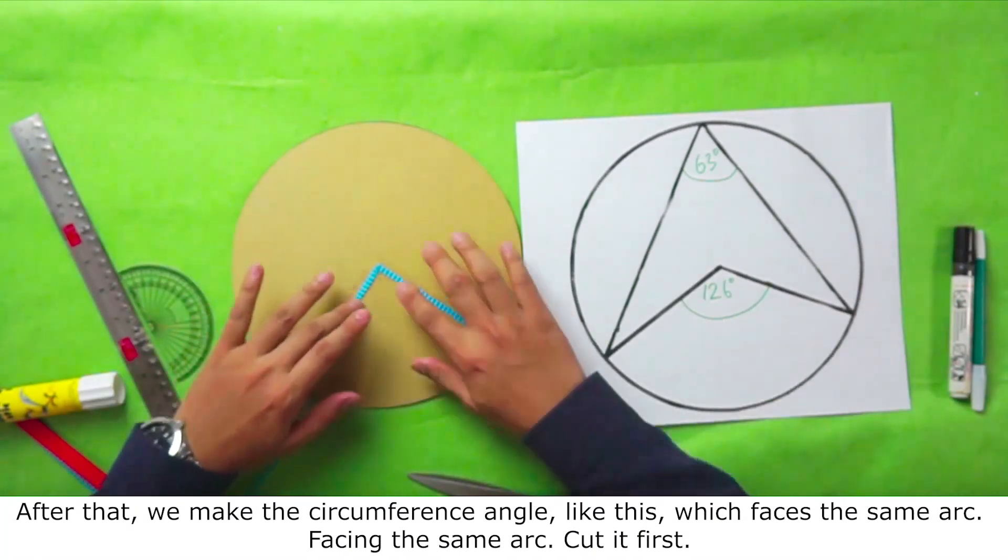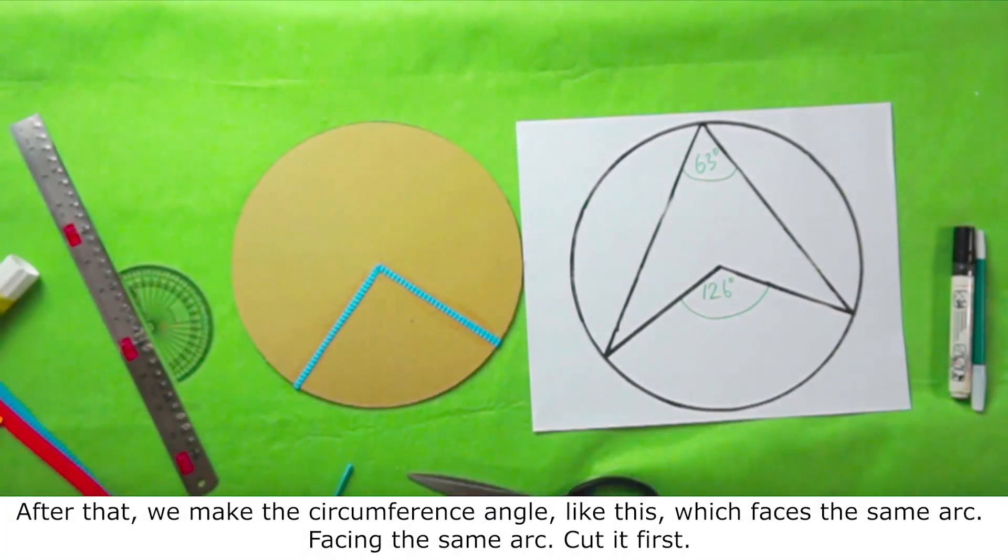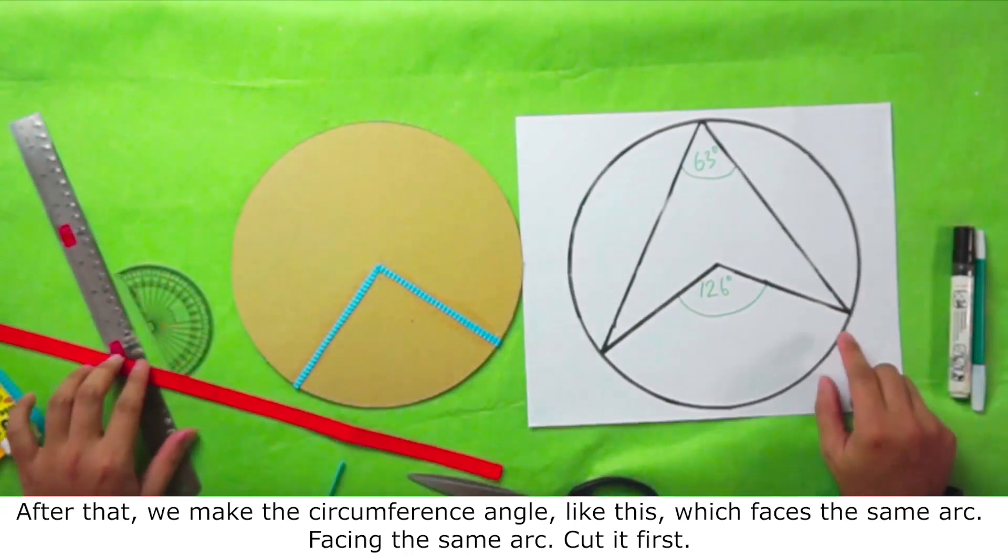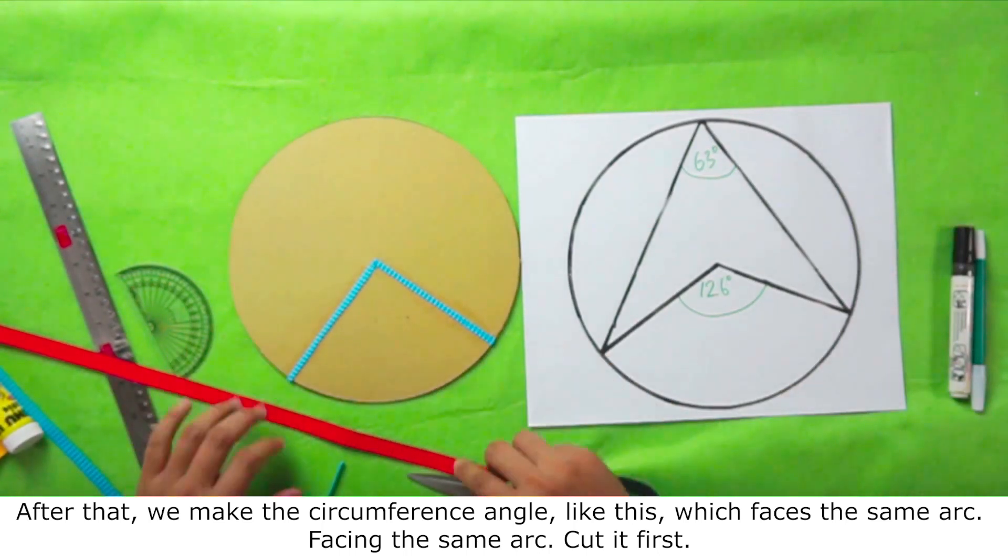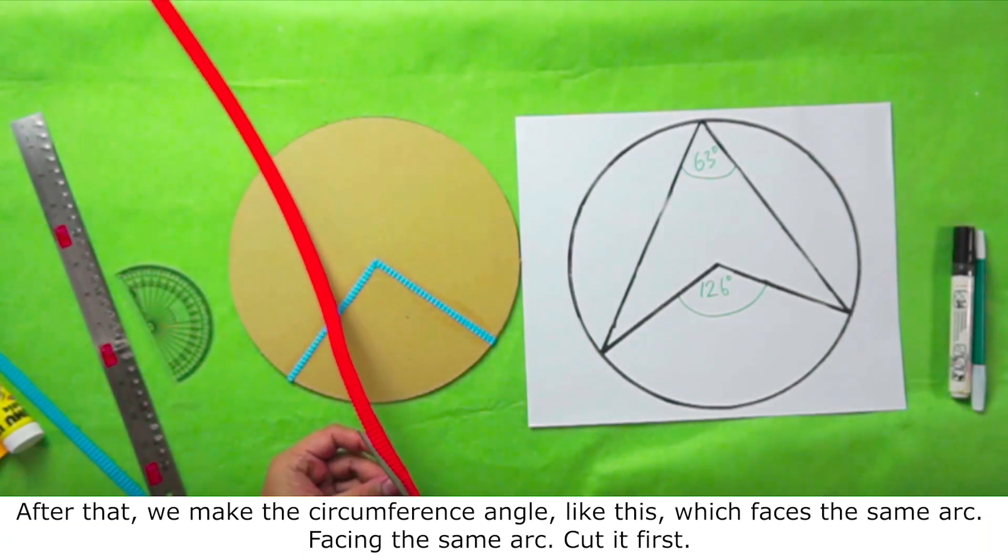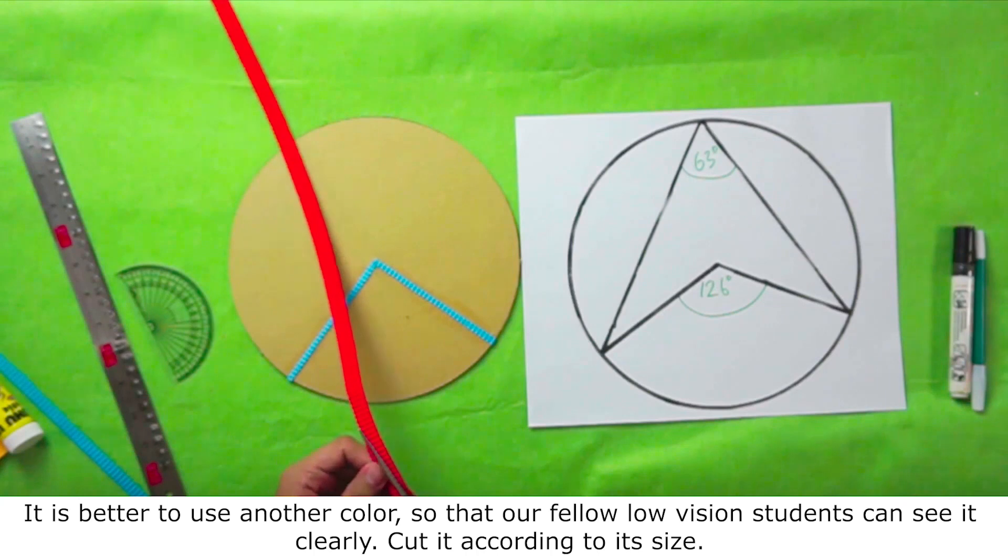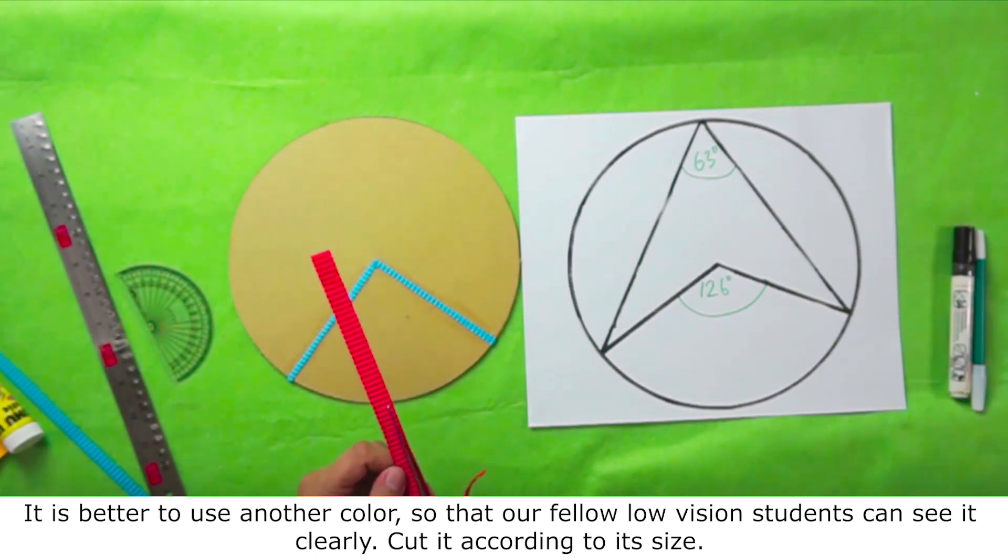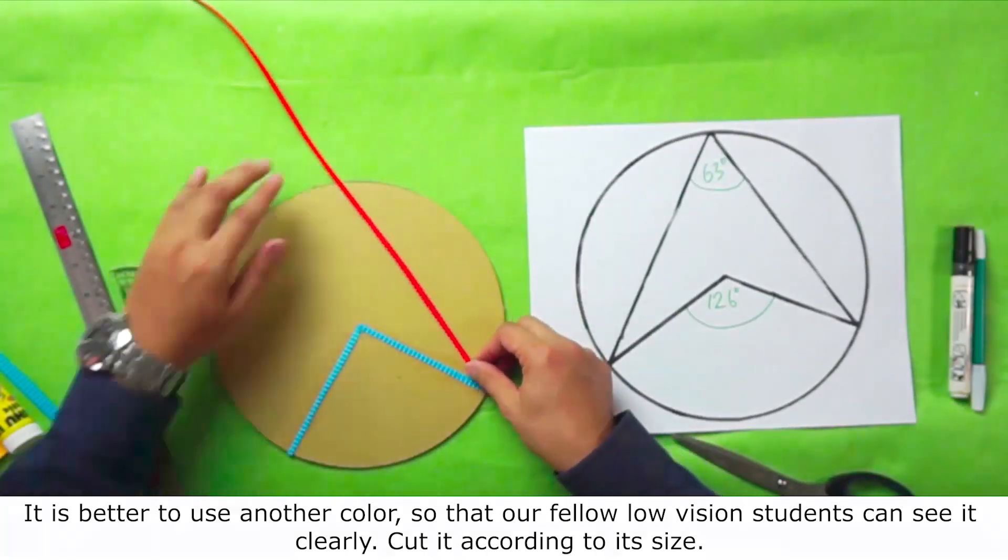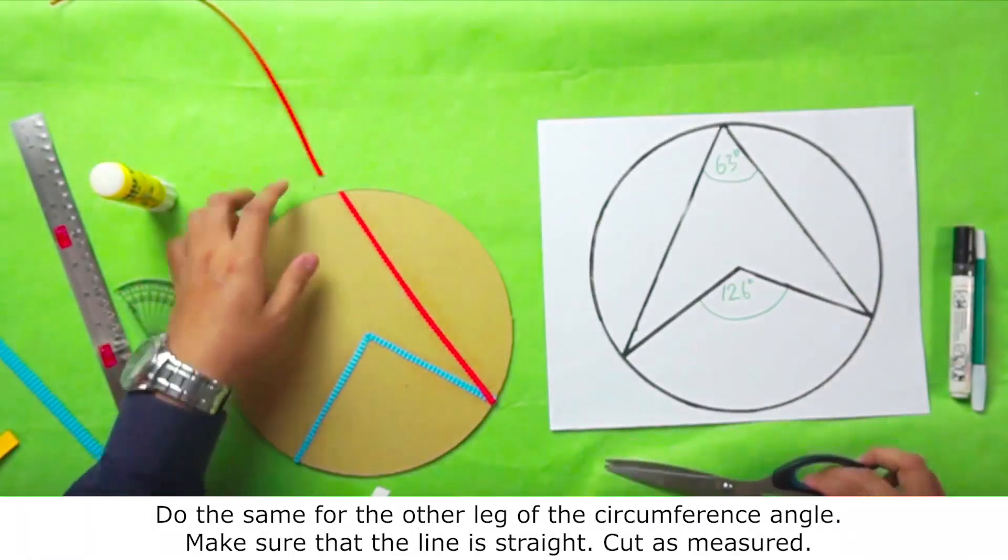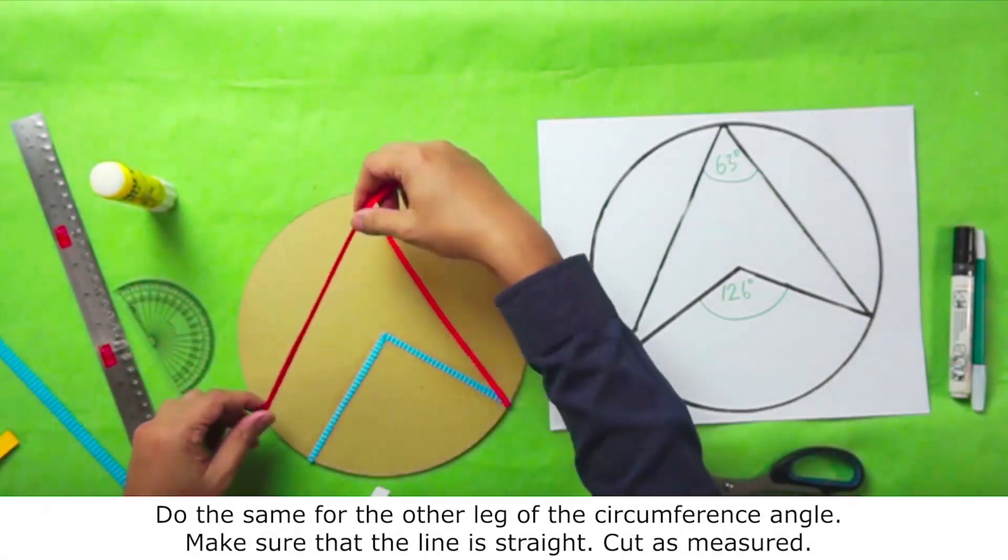After that, we make the circumference angle, like this, which faces the same arc. Cut it first. It is better to use another color, so that our fellow low vision students can see it clearly. Cut it according to each size. Do the same for the other leg of the circumference angle. Make sure that the line is straight. Cut as measured.